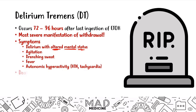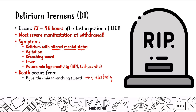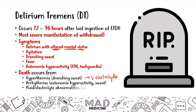Death from delirium tremens most often occurs due to hyperthermia and drenching sweat — because you're sweating so much, you have decreased electrolytes, which can lead to arrhythmias and fluid-electrolyte abnormalities. Delirium tremens can be life-threatening and death can occur when patients withdraw from alcohol without proper treatment. This is one of the very few drug withdrawals that will actually kill you — unlike opioid or stimulant withdrawal, alcohol withdrawal can cause death.